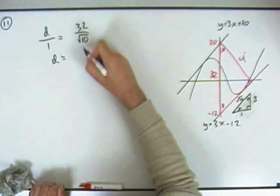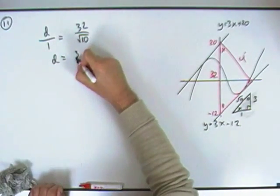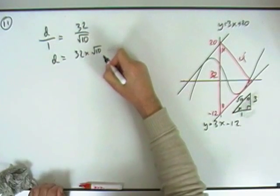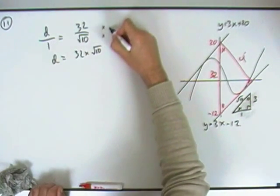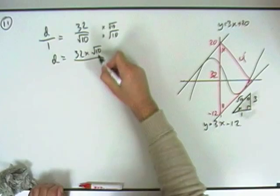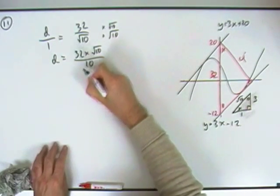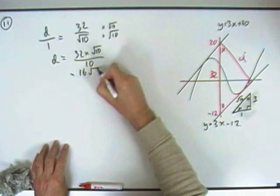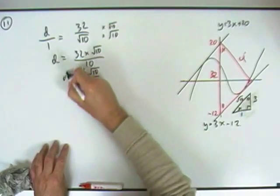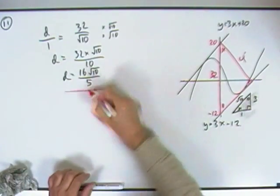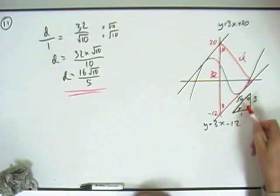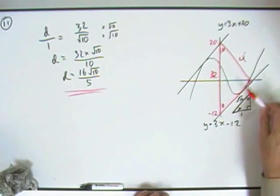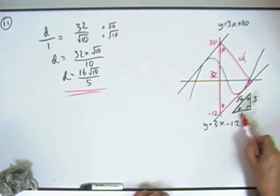Which means D equals 32 upon root 10. Or, rationalizing the denominator, multiplying the top and the bottom by root 10, I've got 32 times root 10 upon 10. Cancel that down. 16 root 10 upon 5. And there it is, straight away from similar triangles. It's very useful to remember, the gradient forms a triangle.